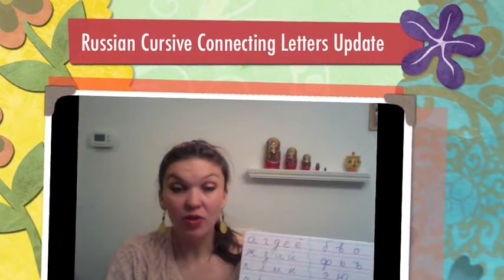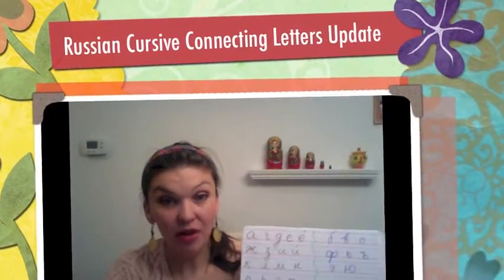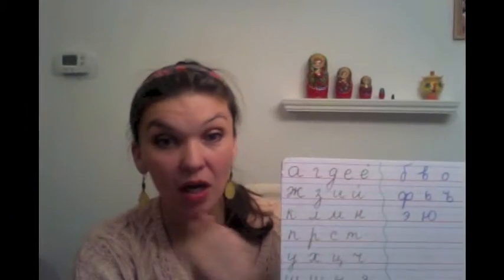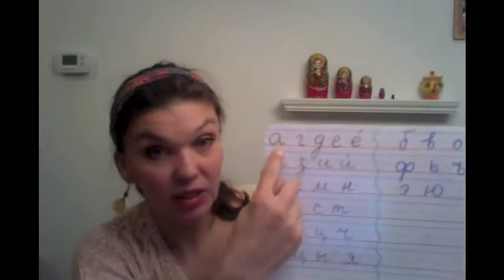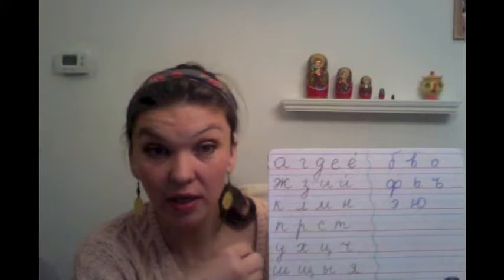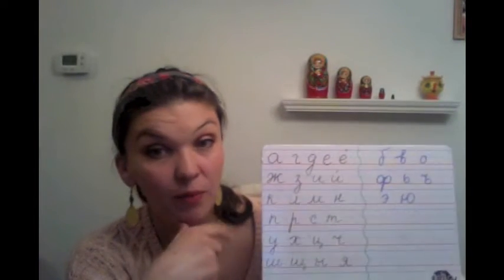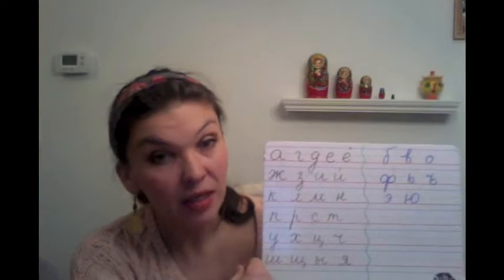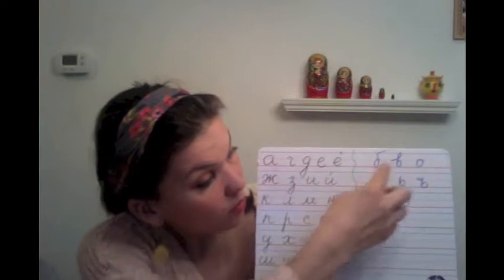In my first video, I talked about how we can divide all of the letters in the Russian alphabet into two groups. One group contains letters that have a natural extension to them — this is how they are written in the alphabet. In cursive, they each have a little tail, a little extension that's already there. The second group contains all of the letters that don't have a natural extension to them, and if you notice, all of them have one way or another a circular shape.